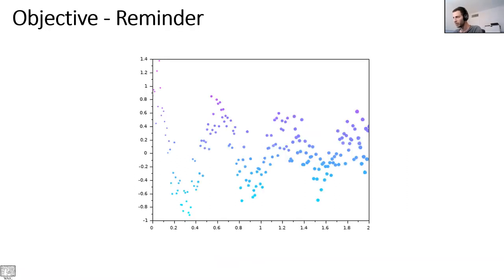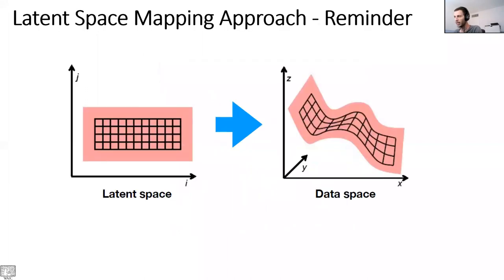We will start with a small recap of Asaf's lecture last week. The objective was in a generative model to discover what is the distribution of the data and try to generate new instances that align with this distribution. The main approach Asaf discussed was the latent space mapping, where you had a known latent space — for example, a normal distribution with mean zero and standard deviation of one — and you want to find the mapping between this known distribution and the data manifold. Neural networks are usually used to find this map.